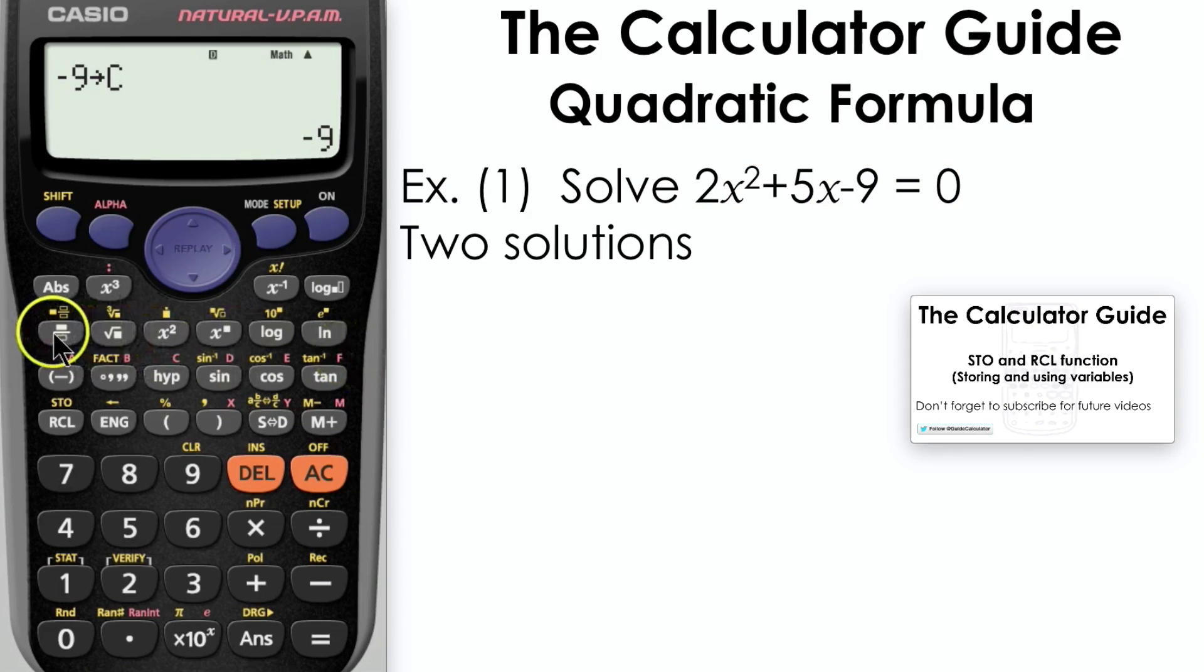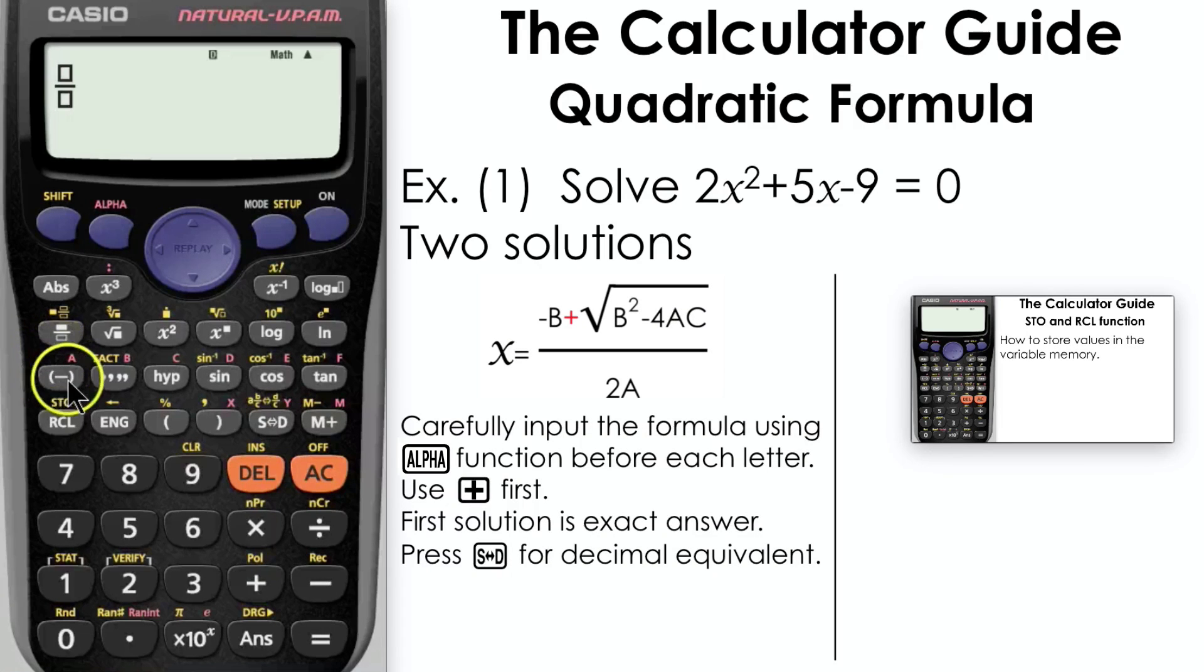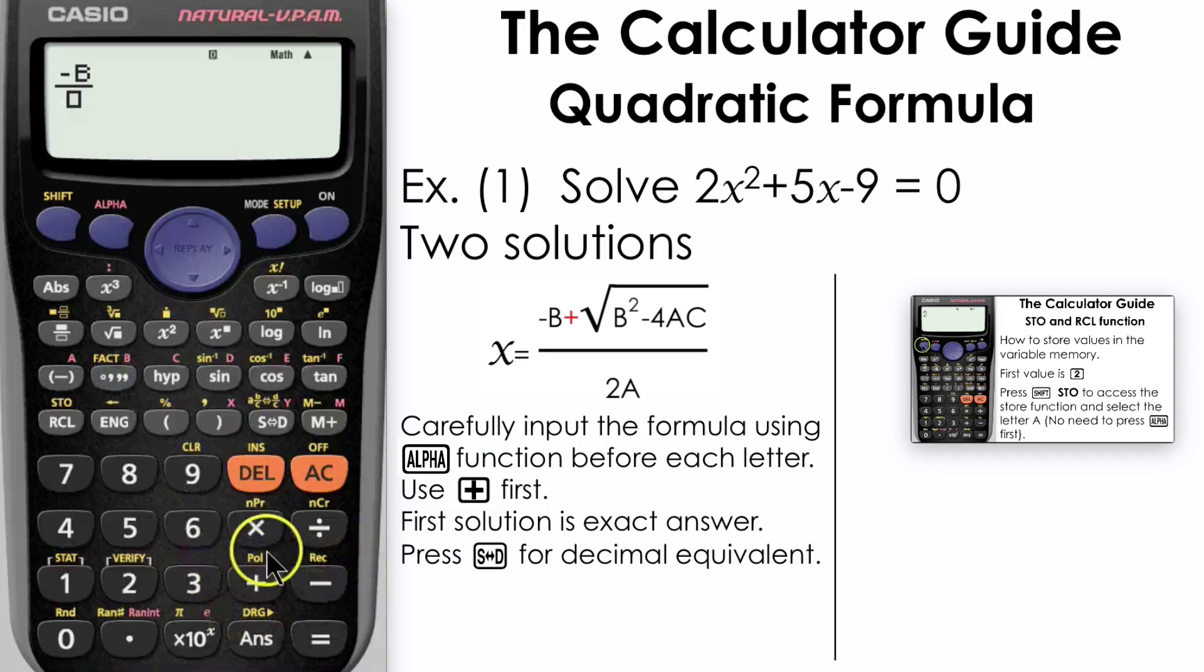Now we're going to have two solutions to this equation. We're going to carefully input the formula. We're going to start by pressing the fraction button first and then input the top line, but we'll use the plus value. Remember, it's plus or minus when using the quadratic formula. We're going to do one at a time on the calculator, so we'll use the plus first.